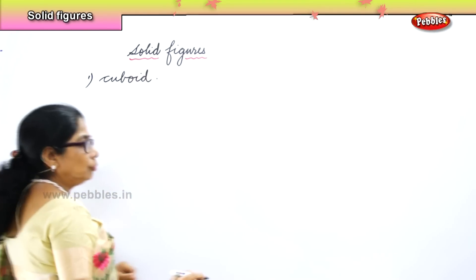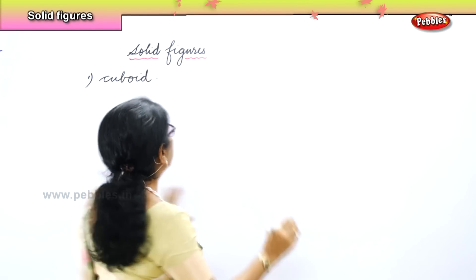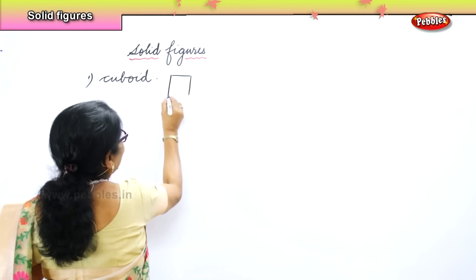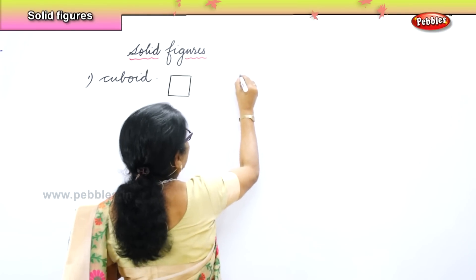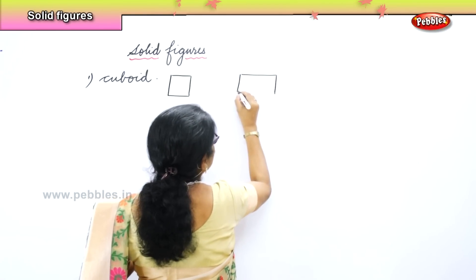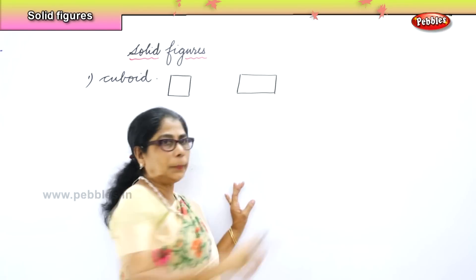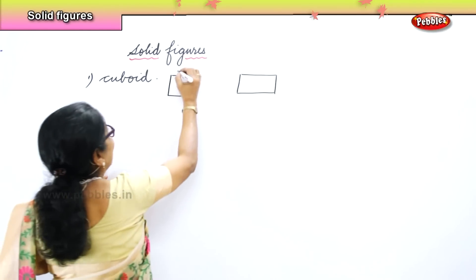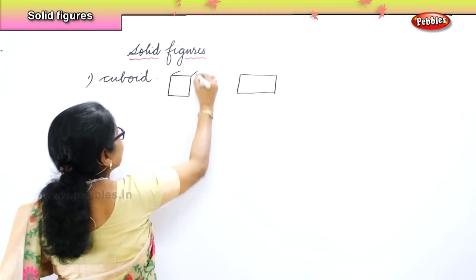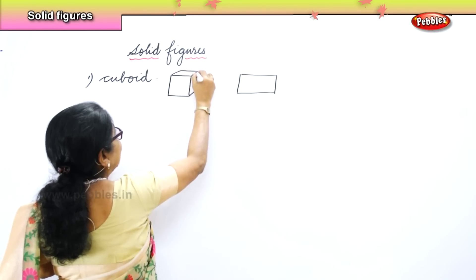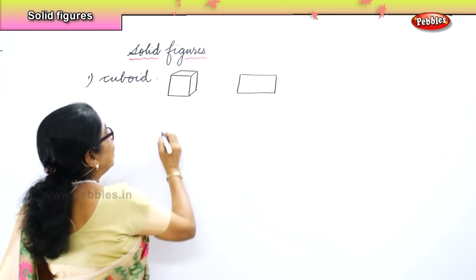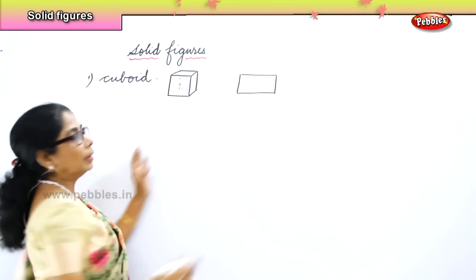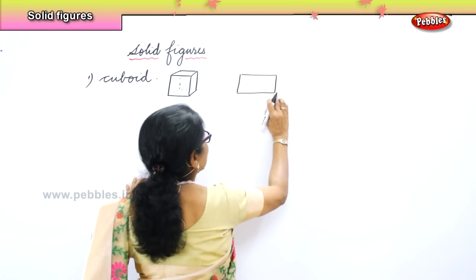What is a cuboid? How to draw a cuboid? The plane figure — we learnt to draw the square like this, and the rectangle like this. In the rectangle, two opposite sides are equal; in the square, all sides are equal. Now, we are talking about cuboid — a solid. All you need to do is extend it, straighten that and join here. You can see that this is called a cuboid.